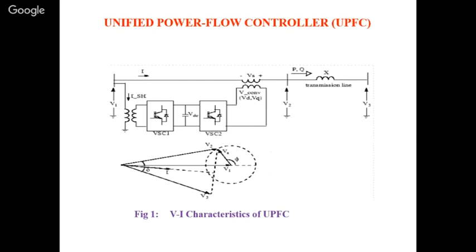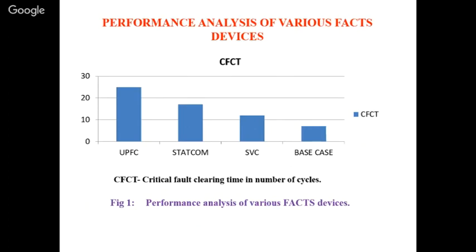The VSC takes real or active/reactive power from here, feeds it to the Vdc, and gives it to this part. The main advantage is dynamic control of voltage — it can move in both directions. To really understand this concept, you should study the phase-shift transformer — UPFC is essentially a modern version of the phase-shift transformer. If you understand the phase-shift transformer, you can understand UPFC also.